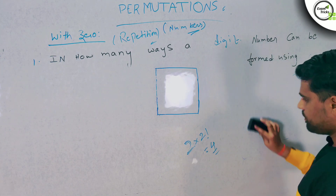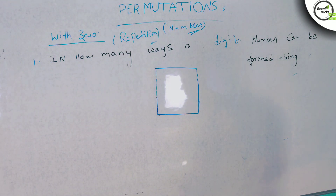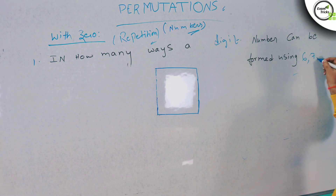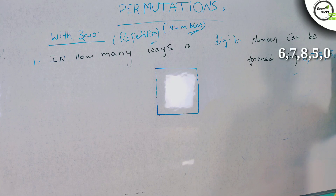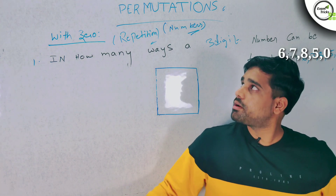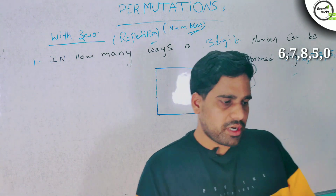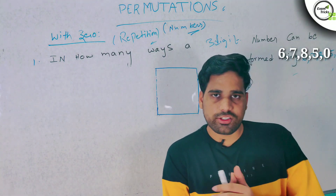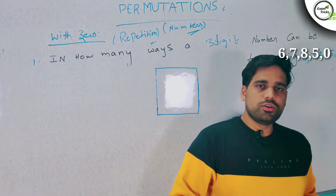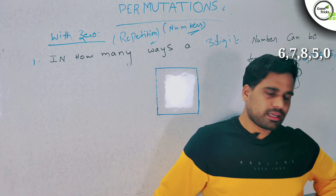Practice question: using 6, 7, 8, 5, 0, find in how many ways a 3-digit number can be formed. Please comment your answer. In this video we covered the concepts of numbers with 0 and without 0 in full. If you are interested, please like, share, and subscribe to the channel.